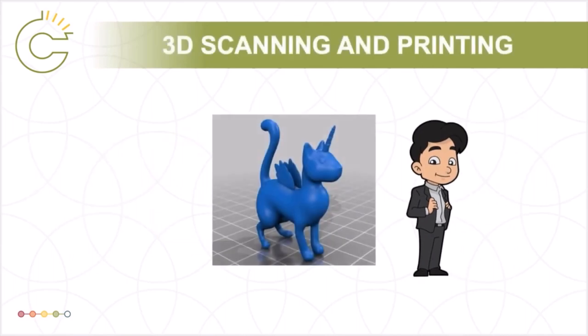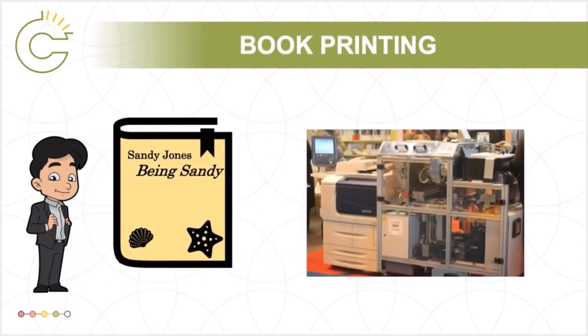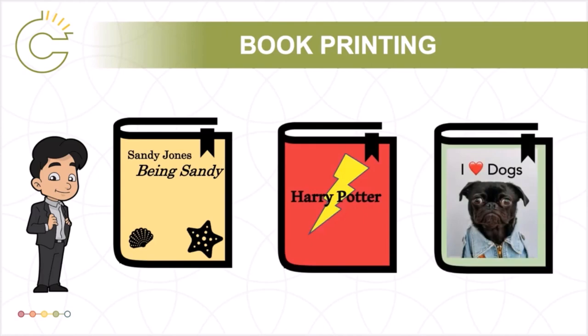It's not just miniature models that Sandy needs the makerspace for — Sandy is also an author. Book printing machines are another common makerspace technology. If Sandy wants to print books they wrote and own the rights for, of course there are no concerns. But if they want to print books still covered by copyright or incorporate copyright-protected materials such as images, then it's important to consider how exceptions like fair dealing and non-commercial user-generated content may apply. Assuming that the book is not for commercial purposes, the user-generated content exception should provide a fair bit of room for Sandy to remix and incorporate others' copyright-protected materials.